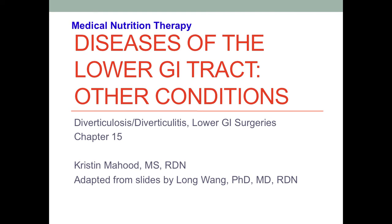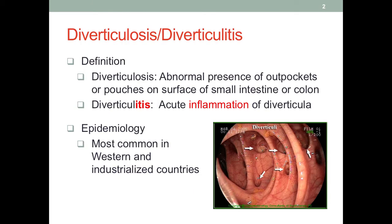Today we will cover other conditions of the lower GI tract. Diverticulosis and diverticulitis are two connected conditions of the intestine. Diverticulosis is the abnormal presence of out-pockets or pouches on the surface of the small intestine or colon. As we can see in this picture, these pocketing structures are called diverticuli or diverticulum.